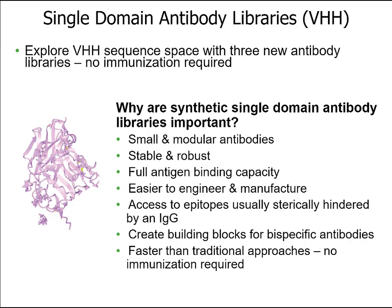One of the types of libraries that we've built are single domain libraries, or VHH libraries. Single domain libraries are really helpful in building bispecific antibodies because they're very small and modular and can be attached onto other antibody sequences. They're very stable and robust, retain full antigen binding capacity much like a full-length antibody, but are very easy to engineer and manufacture. Because of their smaller nature, they're able to access epitopes that might be sterically hindered by a larger IgG framework. Using synthetic libraries, we might be able to get to sequences that bind specific targets and epitopes much faster than immunization approaches.